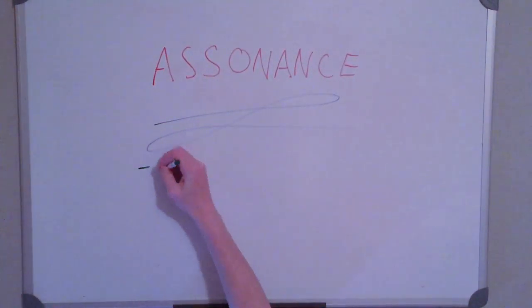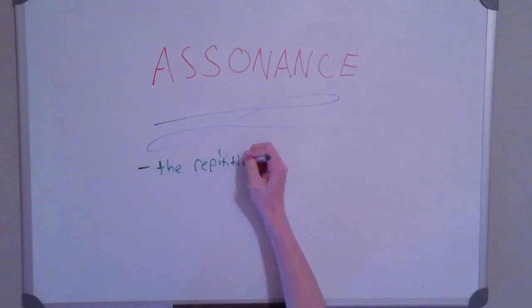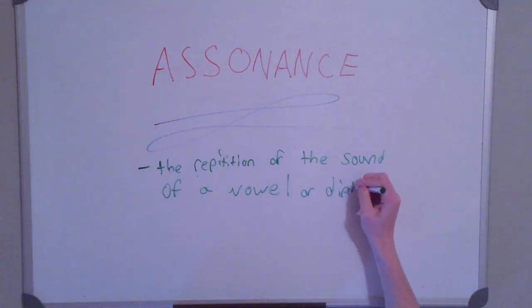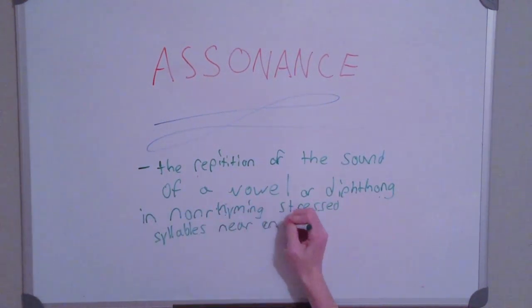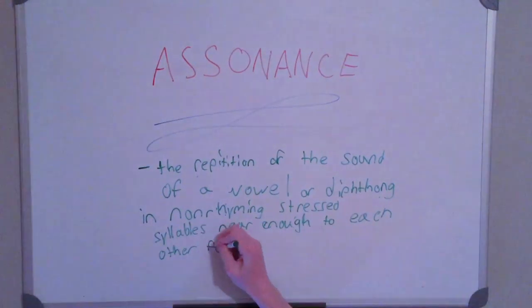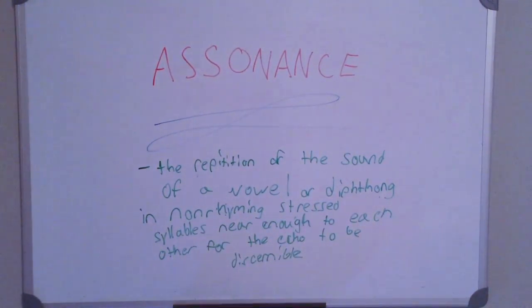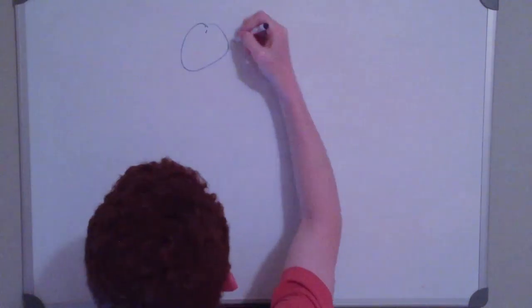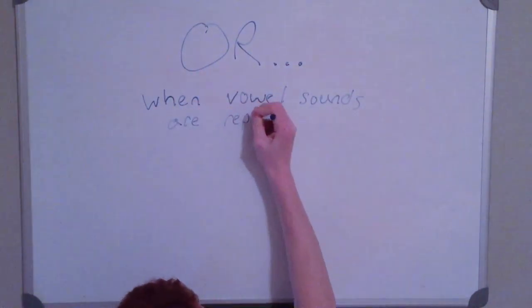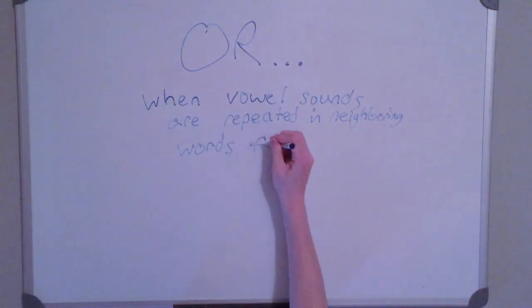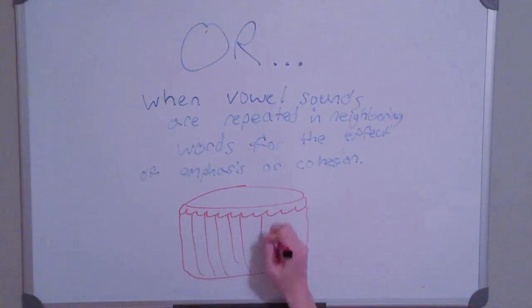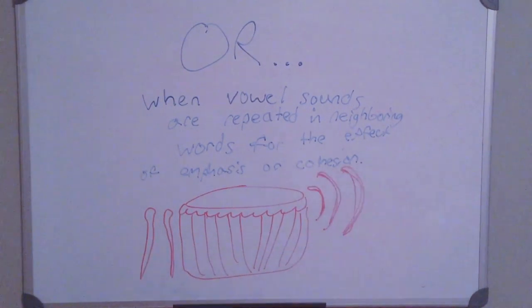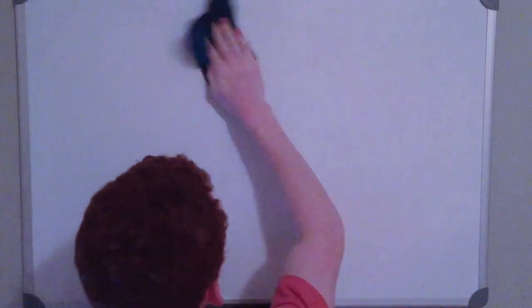Assonance. The technical definition is the repetition of the sound of a vowel or diphthong in non-rhyming stressed syllables near enough to each other for the echo to be discernible. Or in plain English, when vowel sounds are repeated in neighboring words for the effect of emphasis or cohesion. I like to think of this like a drum, and the rhythm of a drum matches the rhythm of assonance.